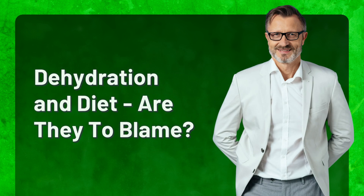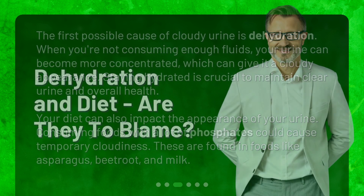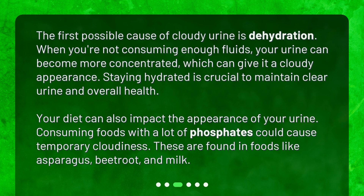Dehydration and diet — are they to blame? The first possible cause of cloudy urine is dehydration. When you're not consuming enough fluids, your urine can become more concentrated, which can give it a cloudy appearance. Staying hydrated is crucial to maintain clear urine and overall health. Your diet can also impact the appearance of your urine. Consuming foods with a lot of phosphates could cause temporary cloudiness. These are found in foods like asparagus, beetroot, and milk.